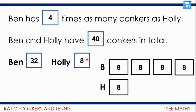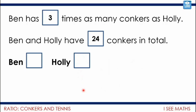Now have a look at this one: Ben has three times as many conkers as Holly, and Ben and Holly have 24 conkers in total. Pause the video — how can we work out how many Ben will have and how many Holly will have? Can you use those drawings? Have a go.